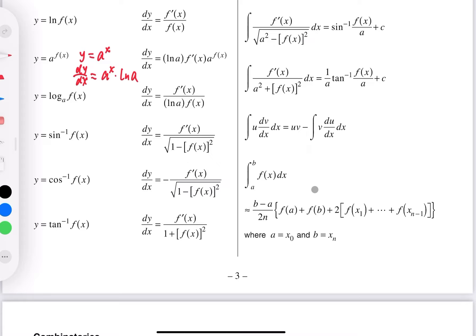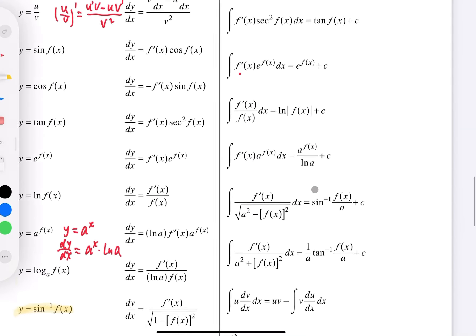And the last three ones actually belong to extension one. So I'm going to highlight them in yellow. That's for extension one students to know. Inverse trigonometry derivatives. Okay, and let's move on to the next section here.